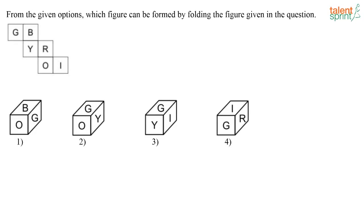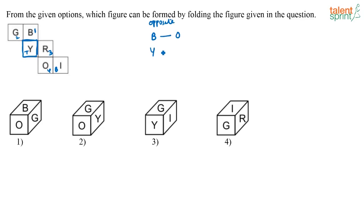From the given options, which figure can be formed by folding the figure in the given question? Let us write down the opposite sides. When you fold it, let us try folding through face Y. If I take Y to be the top, this is going to be side one, two, three and four — basically the four adjacent sides of Y. And this is going to be the opposite side. So if Y is top, this is your bottom. Folding it this way makes it easier to solve. So: B is opposite to O, Y is opposite to I, and G is opposite to R.